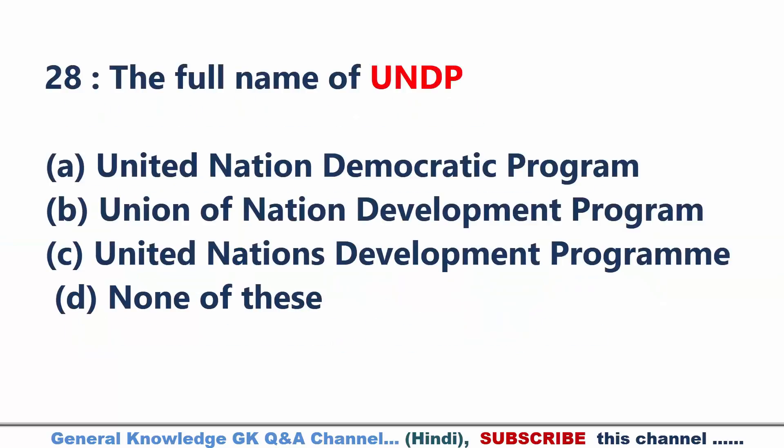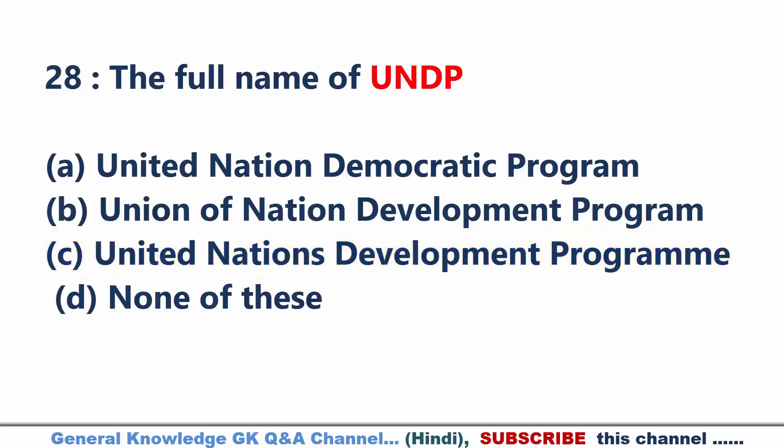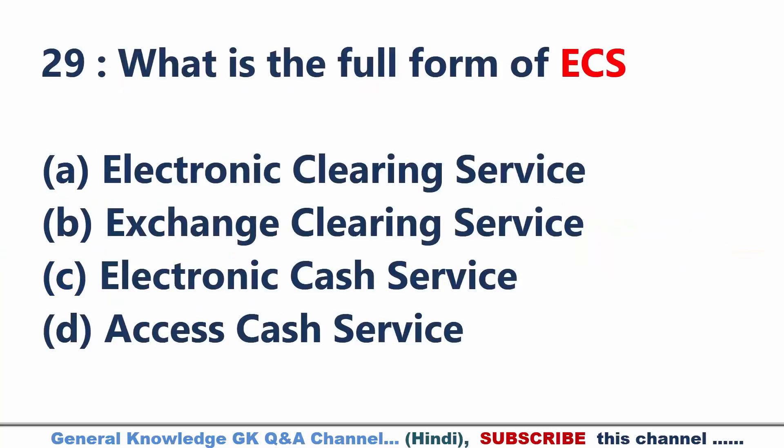What is the full name of UNDP? Answer C: United Nations Development Programme. What is the full form of ECS? Answer A: Electronic Clearing Service.